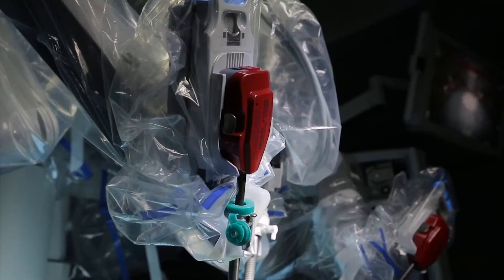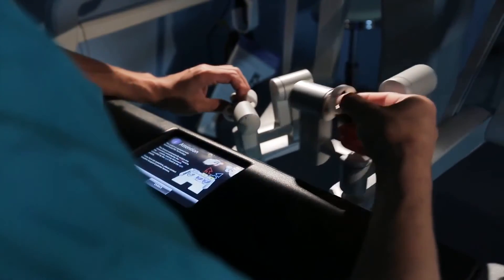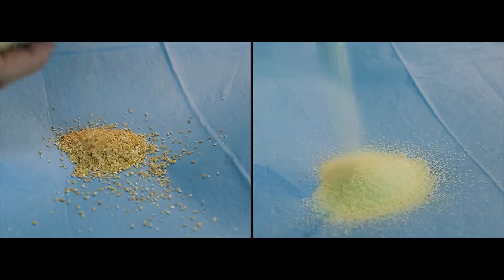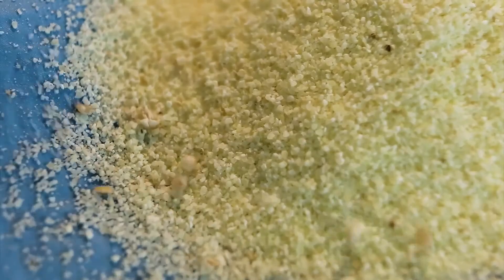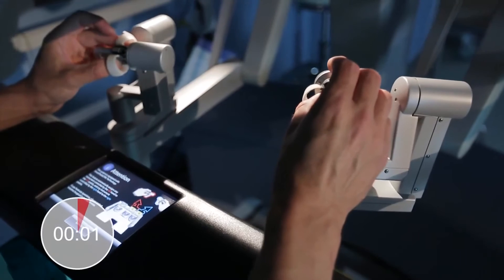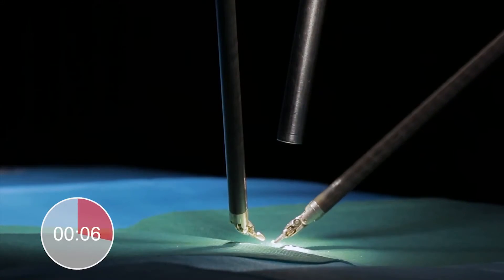Now we will prove that the robot manipulators really can surpass human hands and fingers. A simple yet unusual task. We mixed semolina and barley grits. How long will it take the Da Vinci to separate them from each other? If you think it is easy, then try to do it yourself.